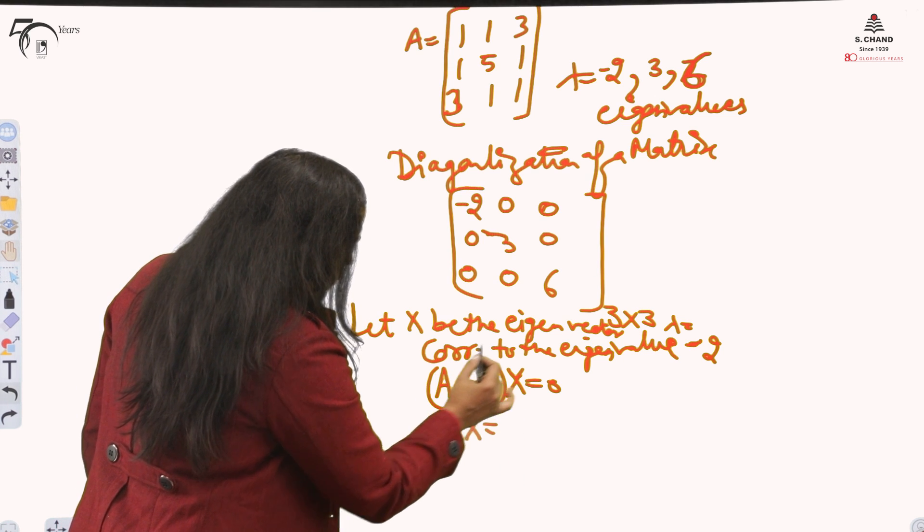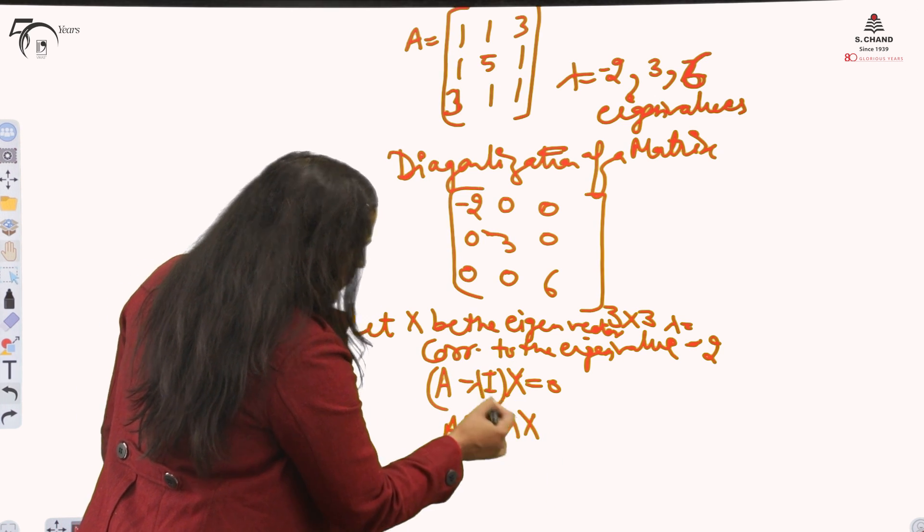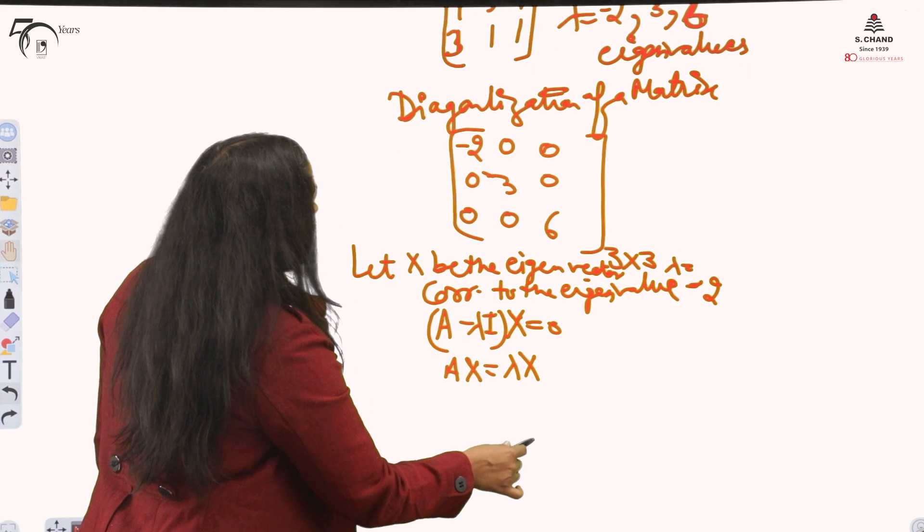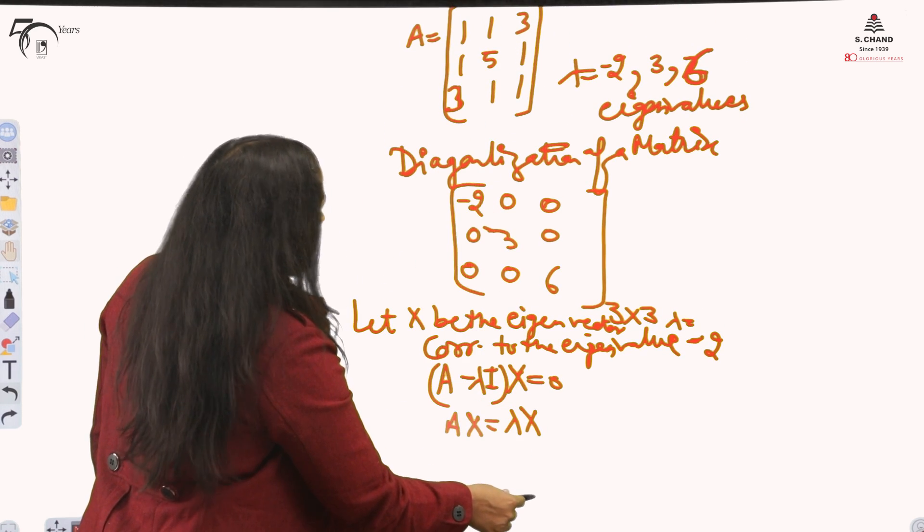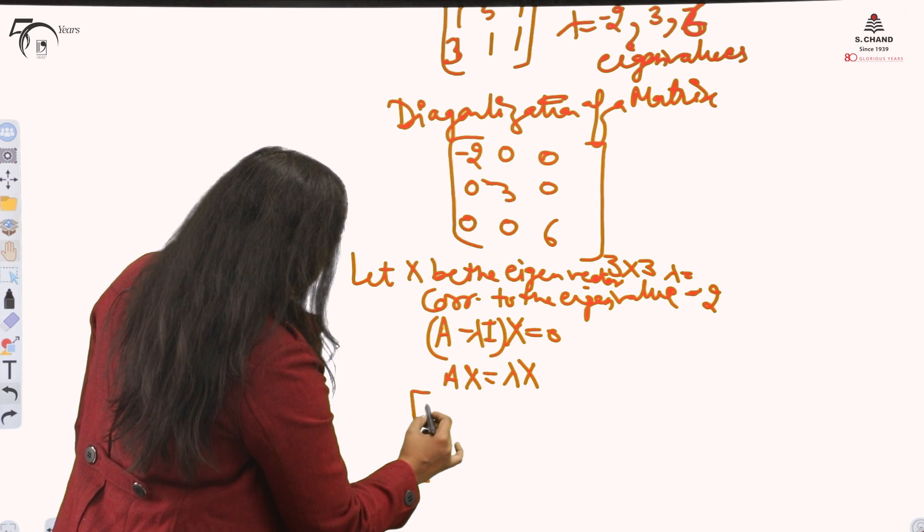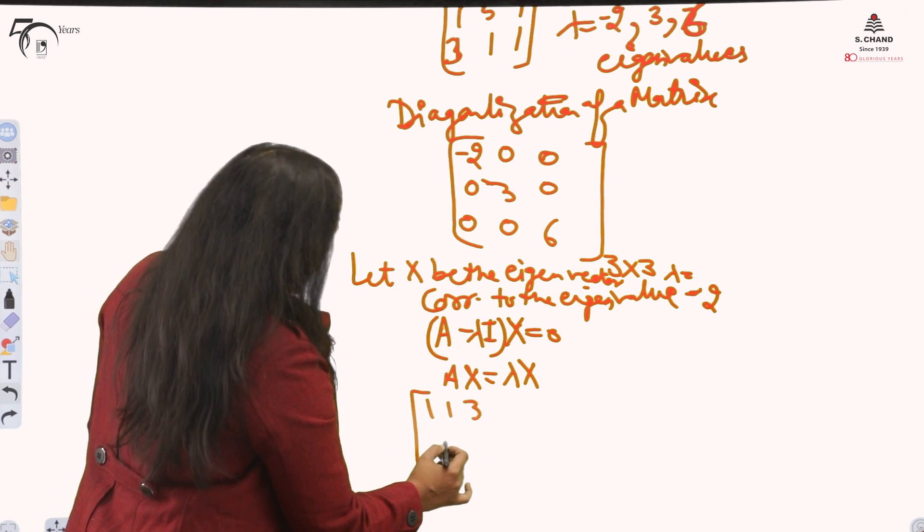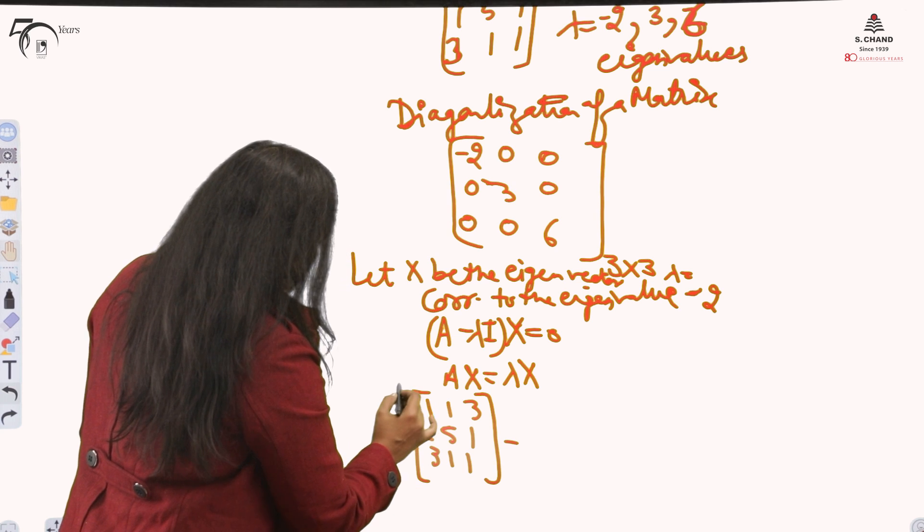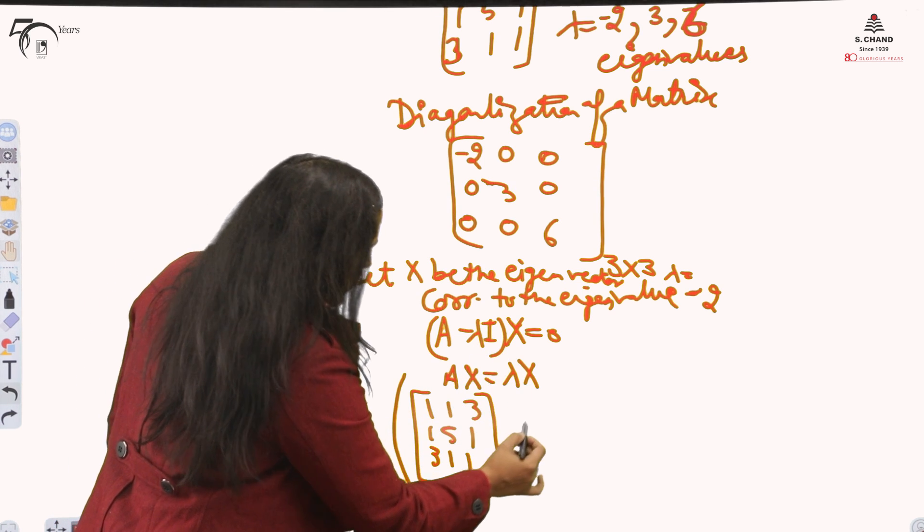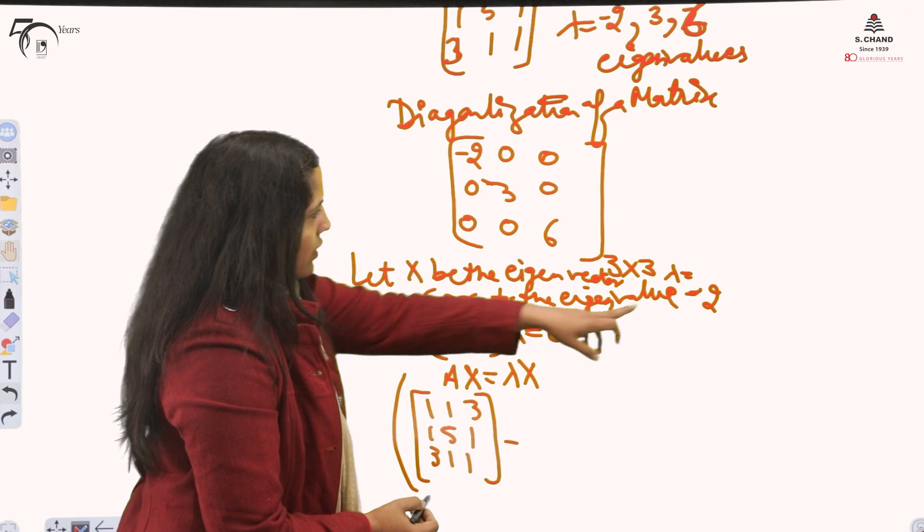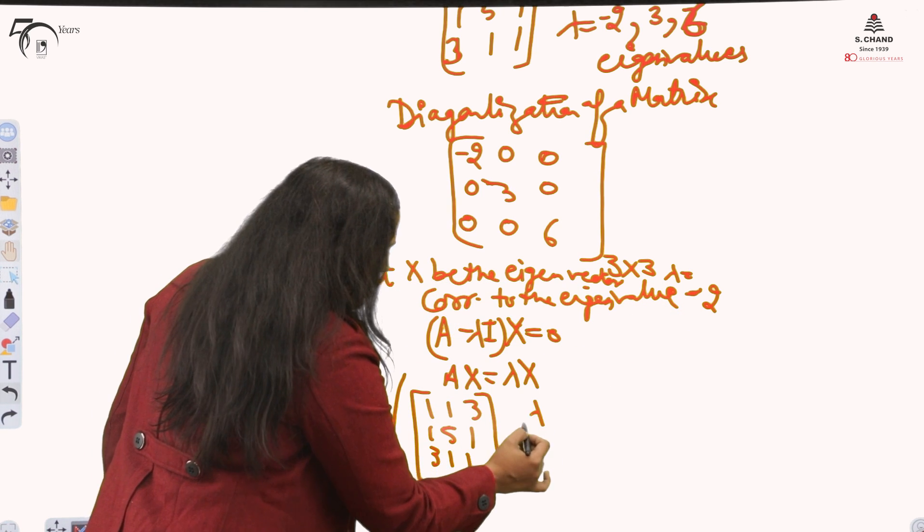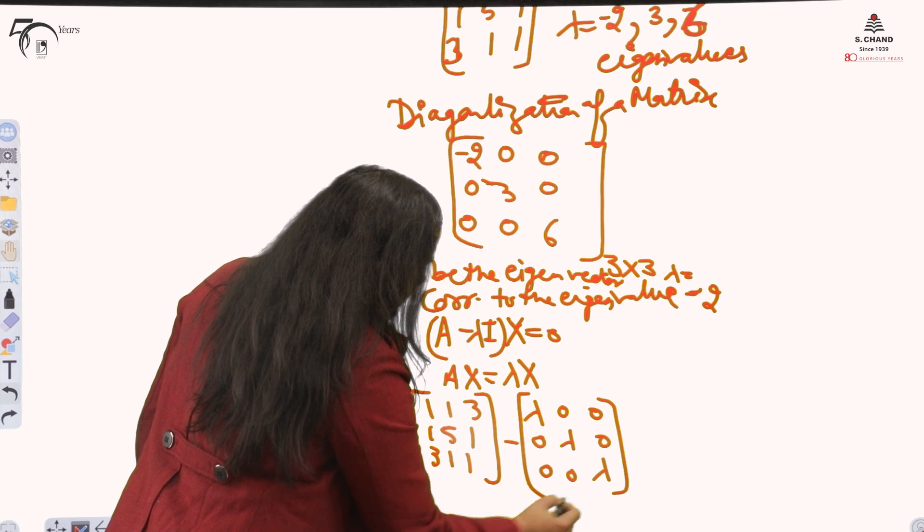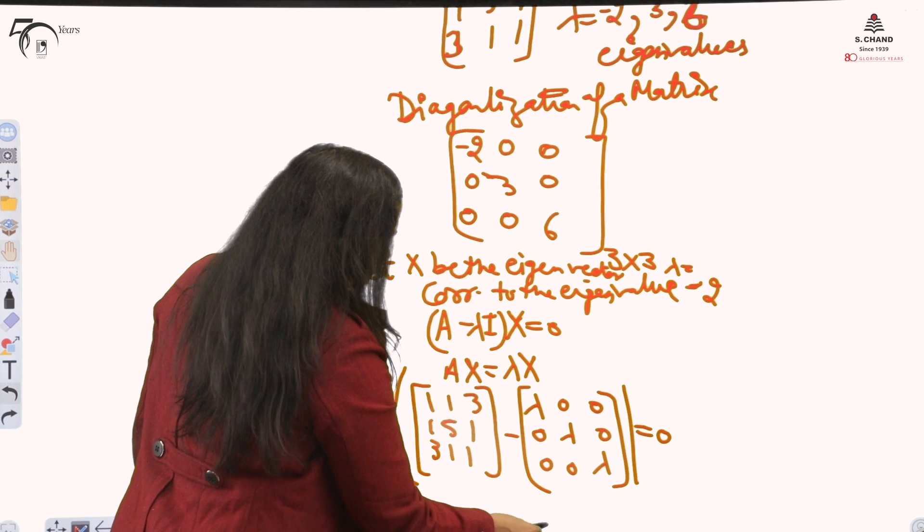When you will multiply, this will give you A times x equals lambda x, because the identity when you multiply by x, it will give you just lambda x. What is my A? A is 1, 1, 3, 1, 5, 1, 3, 1, 1 minus lambda I. Lambda I is lambda 0, 0, 0, lambda 0, 0, 0, lambda.